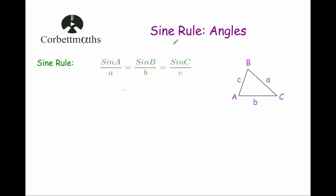Hi, welcome to this quarter maths video on the sine rule. We're going to use the sine rule in this video to work out the size of missing angles. The version of the sine rule I use for this is: sine A over little a equals sine B over little b equals sine C over little c. That's saying the sine of the angle divided by the length of the side opposite it, repeated for each angle-side pair.